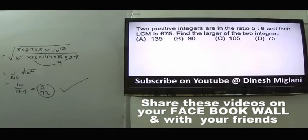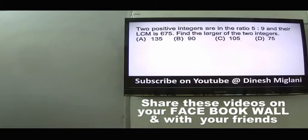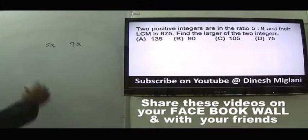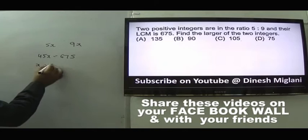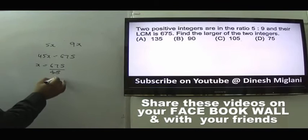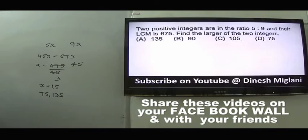Question 33: Two positive integers in ratio 5:9 with LCM = 675. Numbers = 5x and 9x; since 5 and 9 are coprime, LCM = 45x = 675, so x = 15. Numbers are 75 and 135. Larger number is 135. Answer is A.